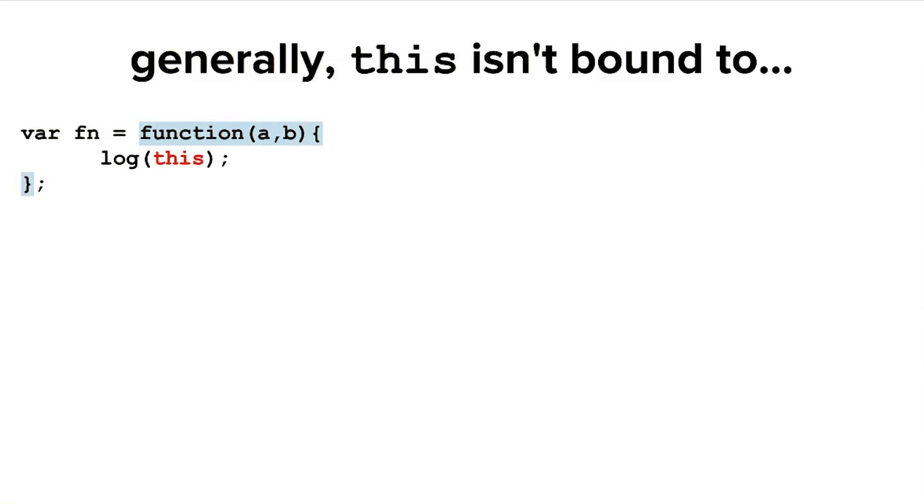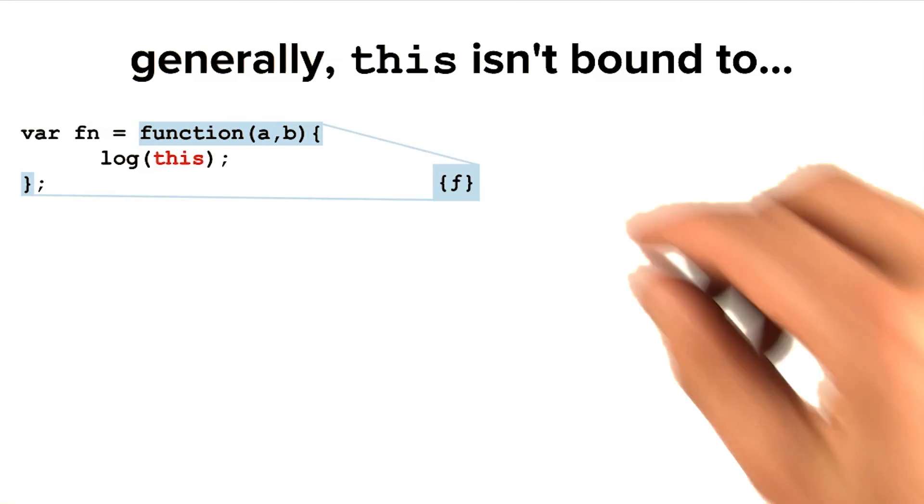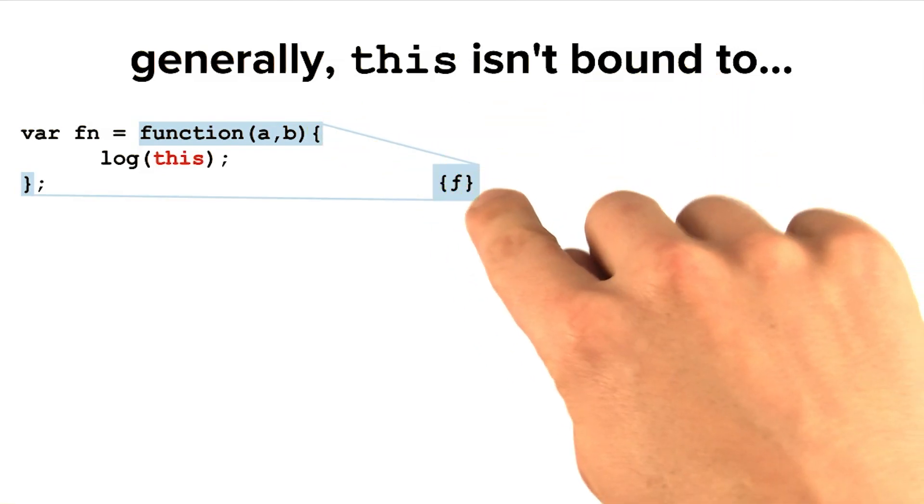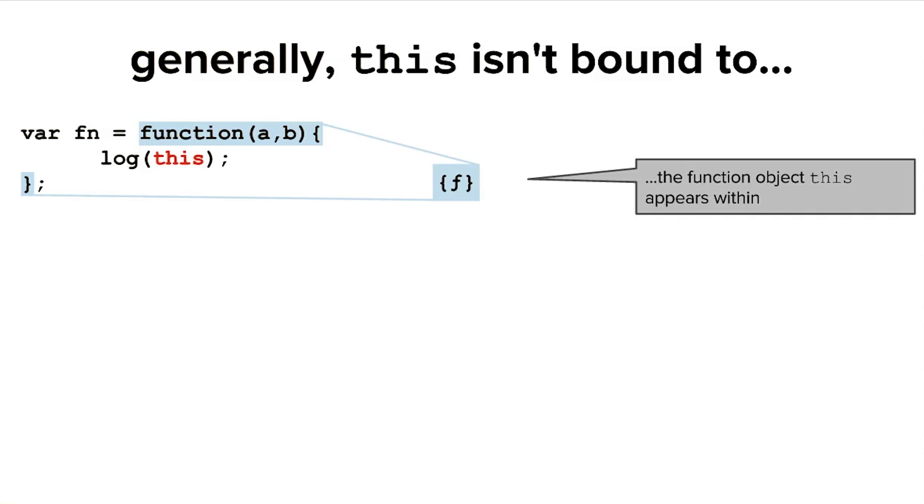First of all, you might see this function definition here, highlighted in blue. And you know that when your interpreter hits it, it's going to create a function object in memory. You may then conclude that the keyword this should refer to that function object. But it doesn't.